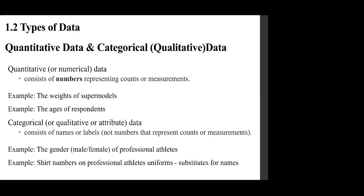Data is divided into two types: qualitative and quantitative. When we have quantitative data, it may be countable — discrete — or it may take place over an interval. Zip codes and student IDs, though numerical, represent qualitative categories and do not have a true numerical value in that sense.